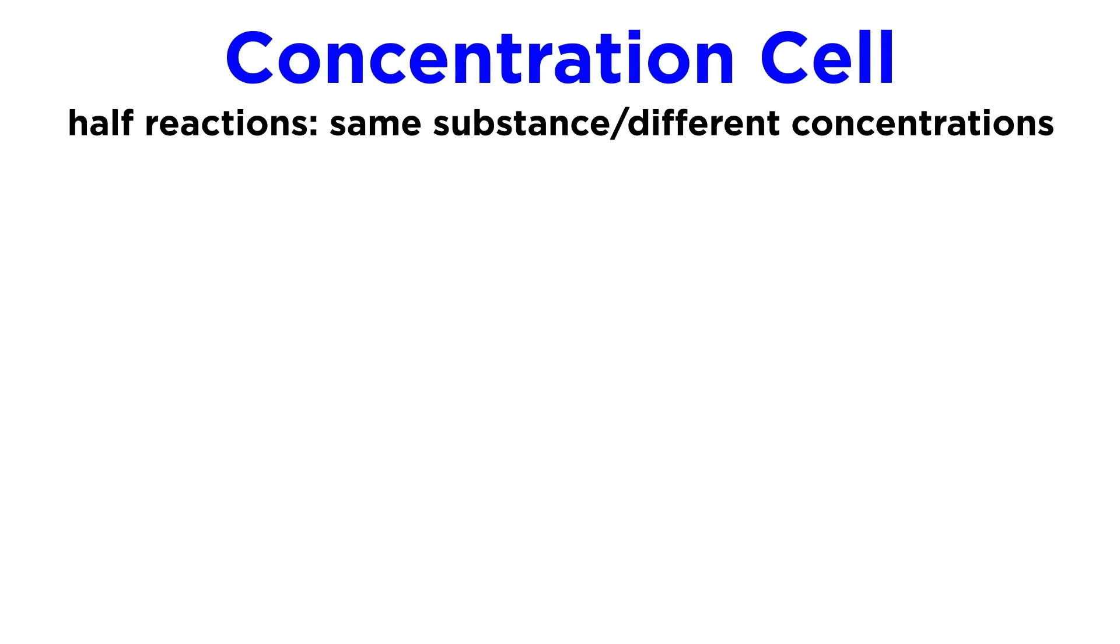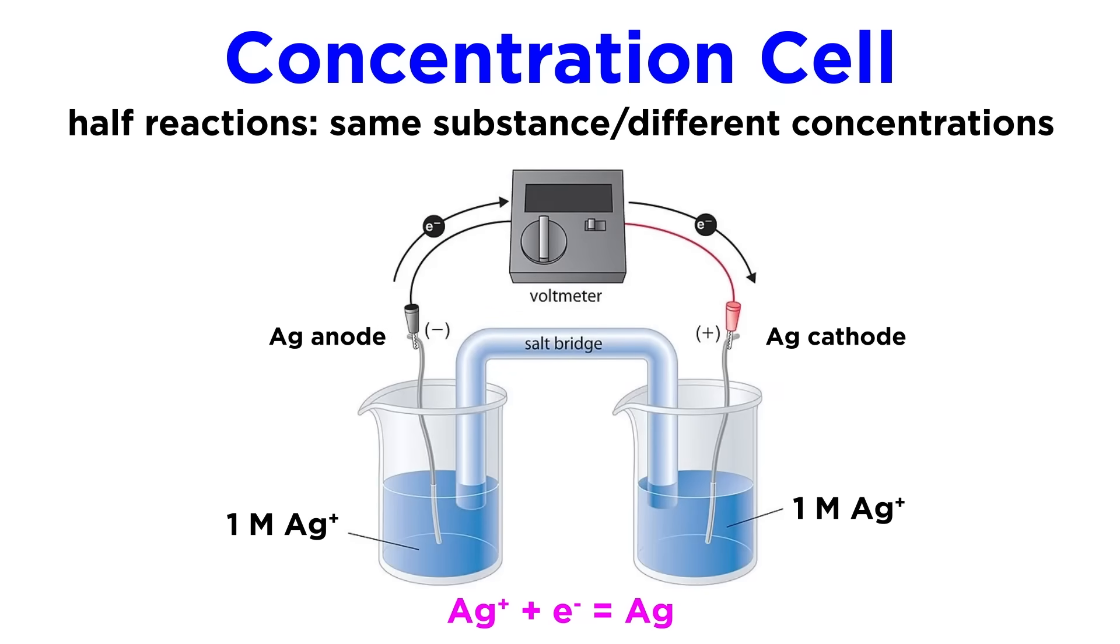We can take advantage of this phenomenon to construct something called a concentration cell. This is where both of the half-reactions in the cell are utilizing the same substance, and therefore the same half-reaction, but they are at different concentrations. For example, take the reduction of silver 1 plus to yield neutral silver. If a cell was constructed with this half-reaction occurring in both half-cells, and the concentrations were equal, the cell potential would be zero.